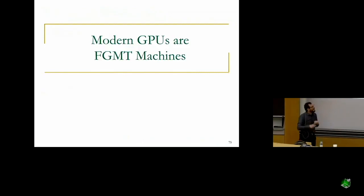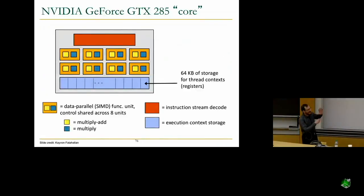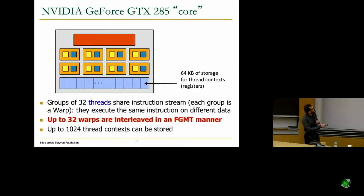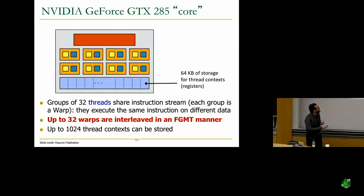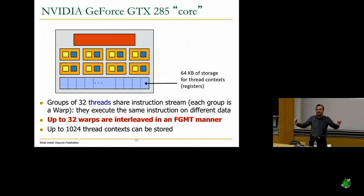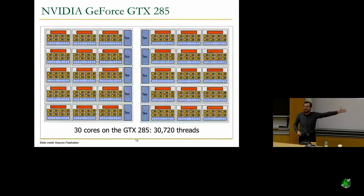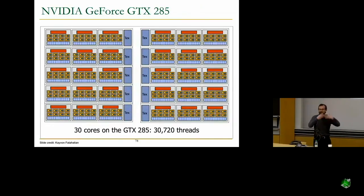Modern GPUs are actually fine-grained multi-threaded machines. This early NVIDIA core has huge storage with lots of registers for different thread contexts. You can execute groups of 32 threads that share an instruction stream — each group is called a warp — and they all execute the same instruction on different data. More importantly, up to 32 warps can be interleaved in this fine-grained multi-thread manner: you fetch from one warp, next cycle the next, then the next, and so on, resulting in a huge machine with lots of threads interleaved in a fine-grained multi-thread manner.